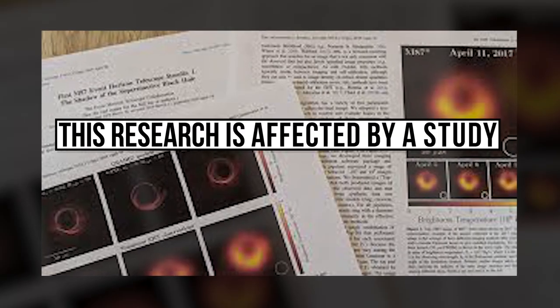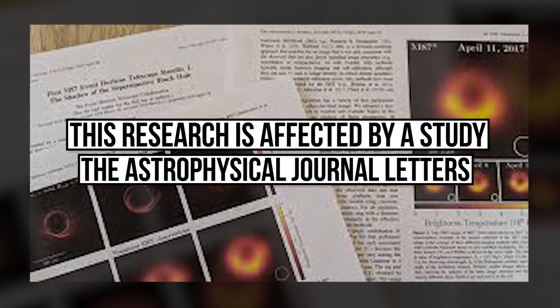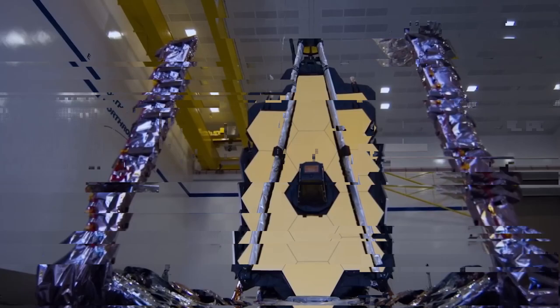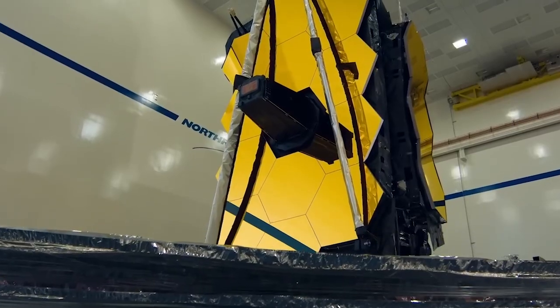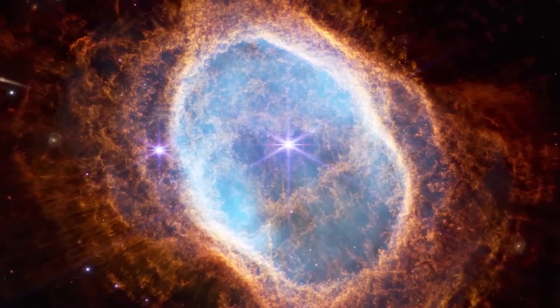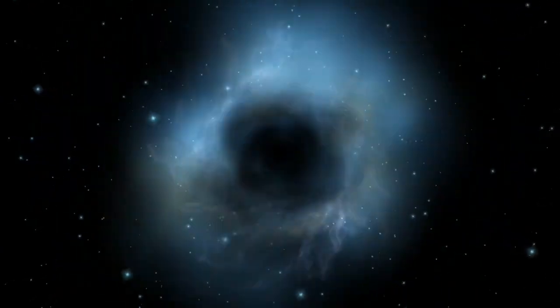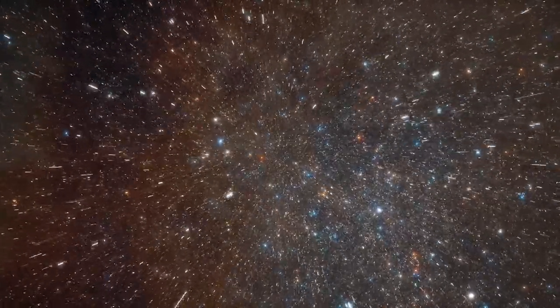This research is affected by a study published by the Astrophysical Journal Letters. In a study published in the Astrophysical Journal Letters, NASA's James Webb Space Telescope, the most potent and complex space observatory ever built, has identified massive knots of gas in the early universe that's only 1 billion years old.